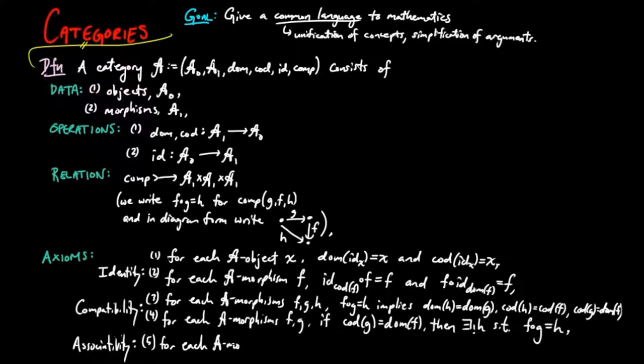Stating that for each amorphisms F, G, H, FGH is equal to FGH, whenever such a composition exists.